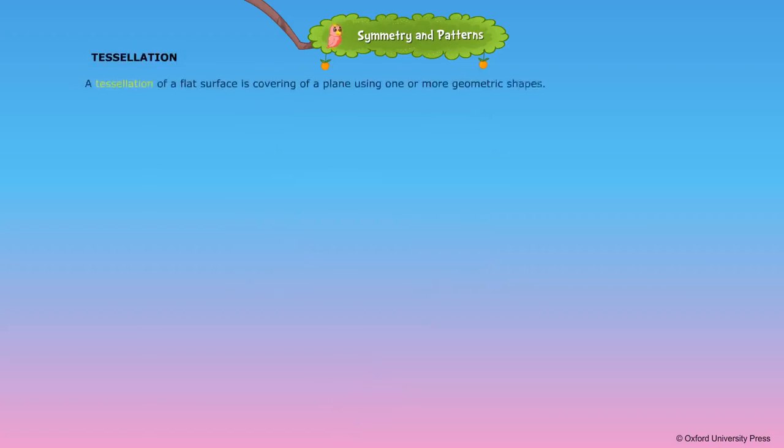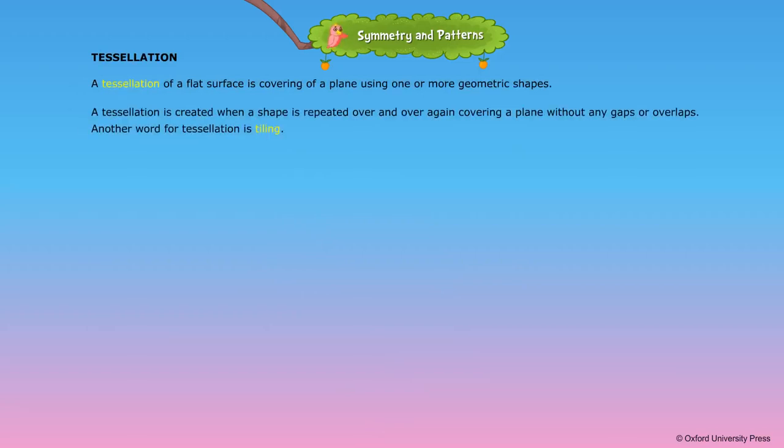Tessellation. A tessellation of a flat surface is covering of a plane using one or more geometric shapes. A tessellation is created when a shape is repeated over and over again covering a plane without any gaps or overlaps.